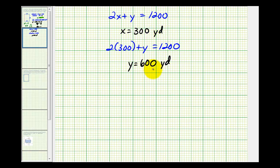So now I can determine the maximum area of this enclosed field. Remember the area was equal to x times y. So we'll have 300 yards times 600 yards. So the maximum area is going to be equal to 180,000 square yards.